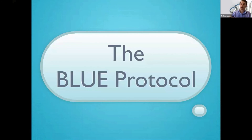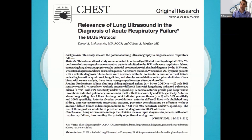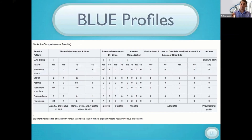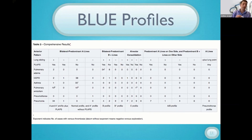Moving on to profiles — taking the individual signs seen at each lung area and putting them into a profile. A profile is a one-sentence or one-word way of describing all your lung findings together, rather than saying 'in this zone I saw that, in that zone I saw this.' It's the single summary of everything you've found.